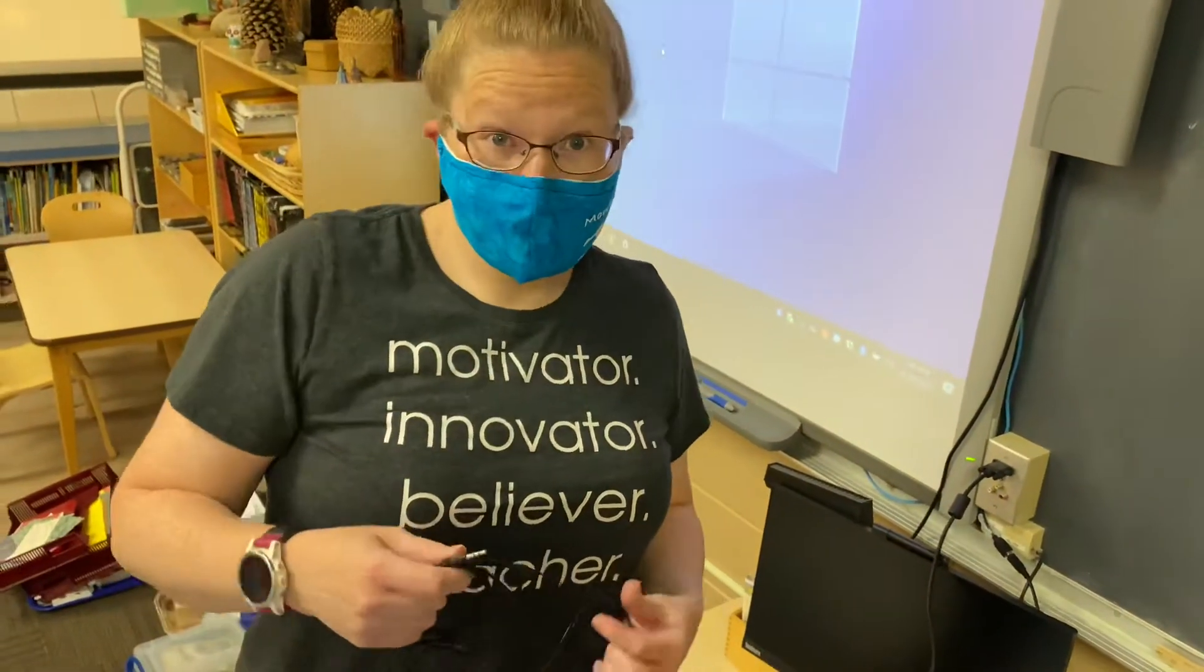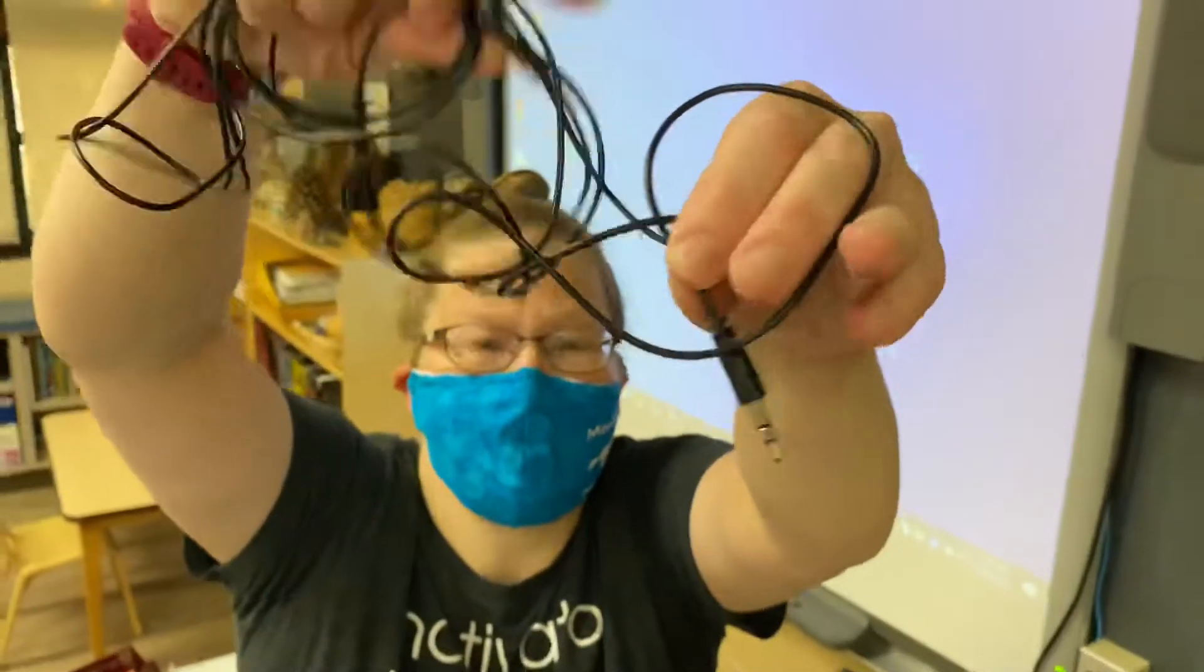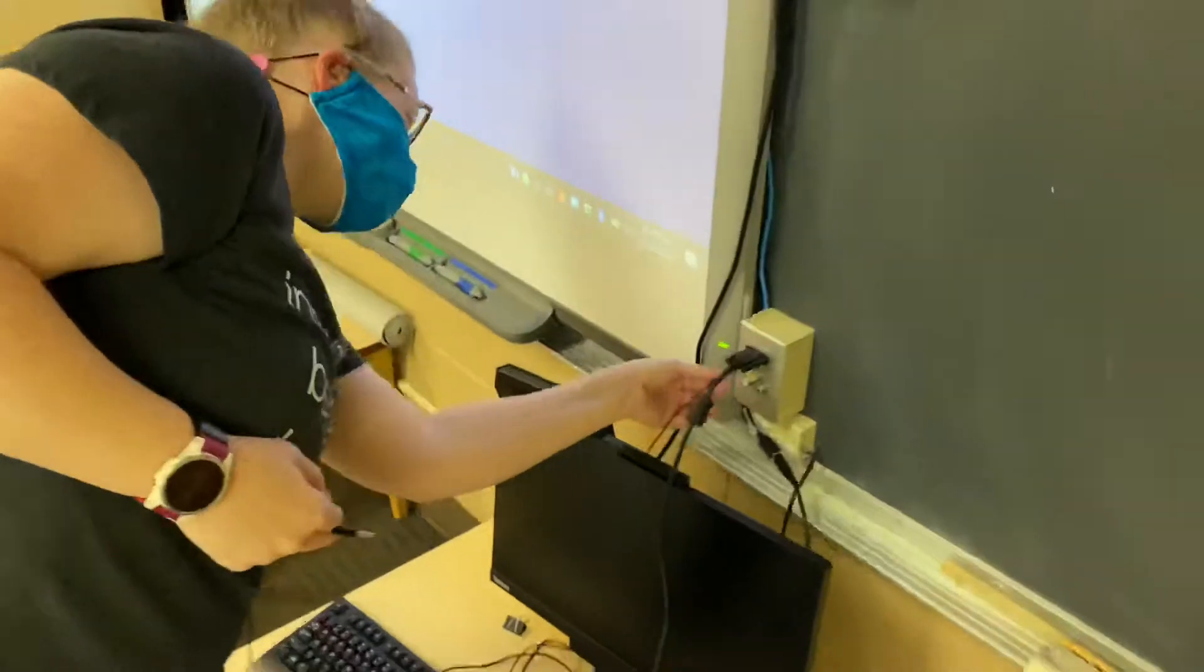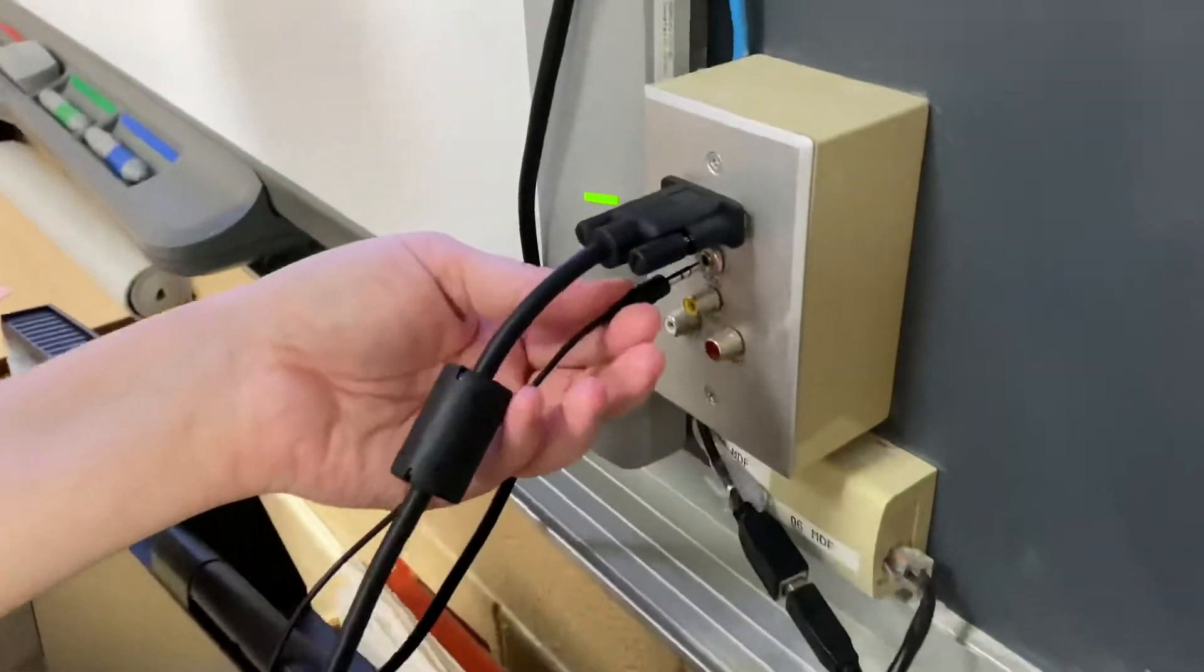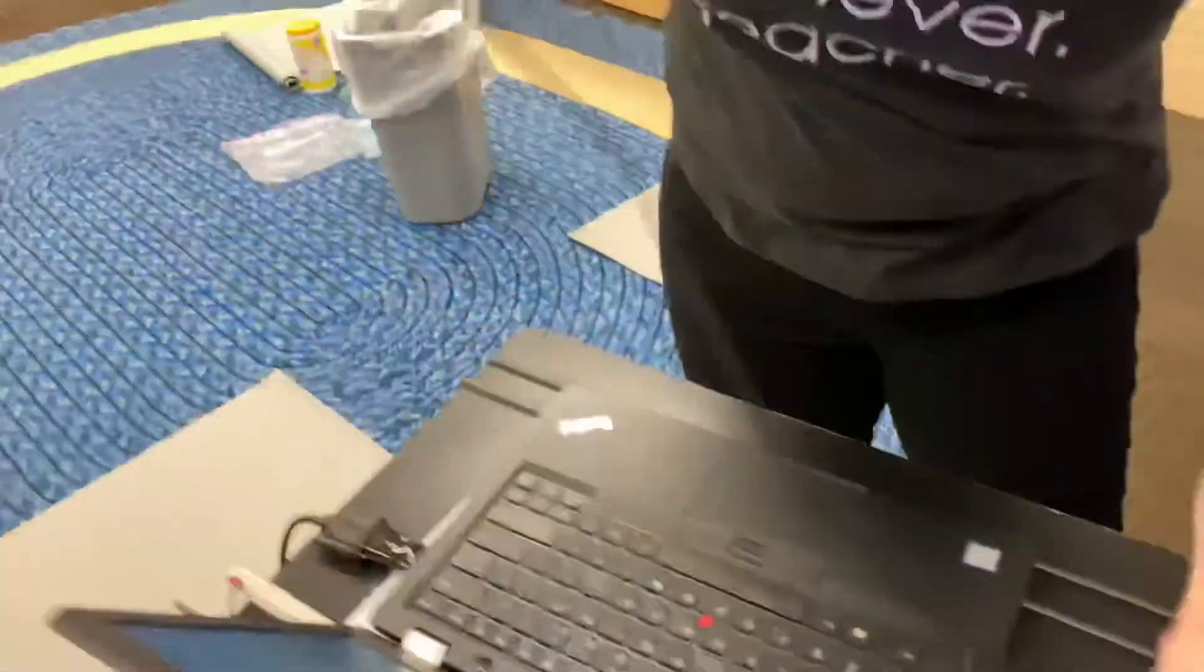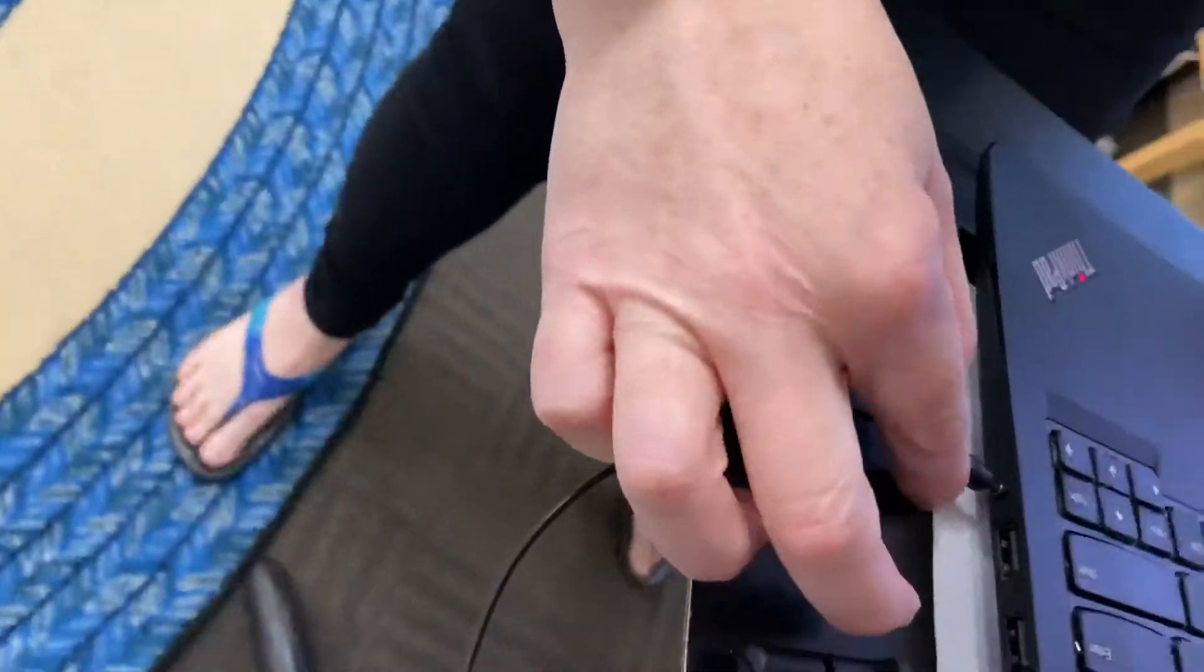So if you want to have sound, you need to get one of these, which is a 3.5 millimeter aux cable. You could buy them for your car, they're really cheap, they have them all over the place. So you want to take that cable, plug it in right underneath that VGA cable where it says audio. Then take the other end of that cable and plug it into the headphone jack on your computer.